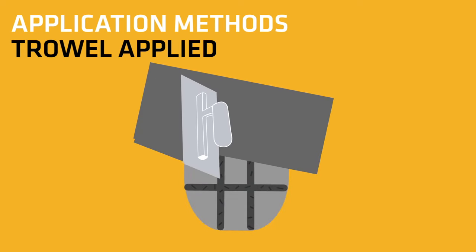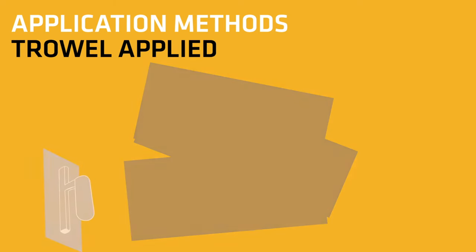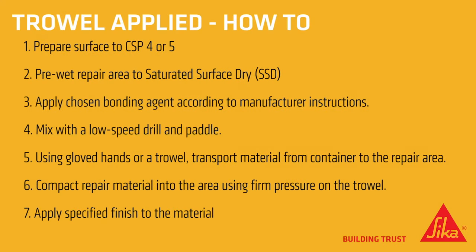Remember, the surface needs to be prepared in accordance with ICRI guidelines. When a bonding agent is used, a CSP 4 or 5 is required; if not, a CSP 6 or 8 will be needed. If you're using a scrub coat, pre-wet the repair area to saturated surface dry. Apply the chosen bonding agent according to the manufacturer's instructions, then mix the repair material with a low-speed drill and paddle. Trowel applied products require gloved hands or a trowel to transport the material to the repair area. Compact the repair material using firm pressure on the trowel and then apply the desired finish.